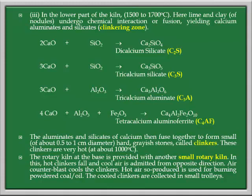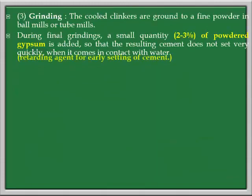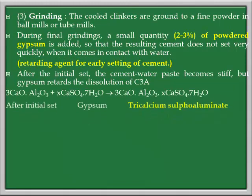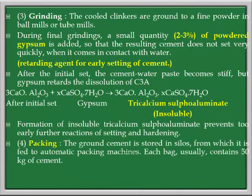The rotary kiln at the base is provided with another small rotary kiln. In this, the hot clinkers fall and cool air is introduced. As the clinkers are very hot, they are cooled down with the introduction of air. The hot air produced is recycled back into the rotary kiln. The cool clinkers are collected in small trolleys. Finally, grinding takes place and the fine powder is obtained with the help of ball mills or tube mills. During final grinding, around 2 to 3 percent of powdered gypsum is added.